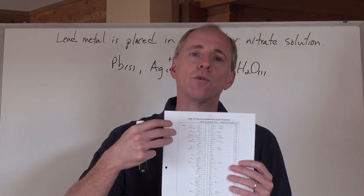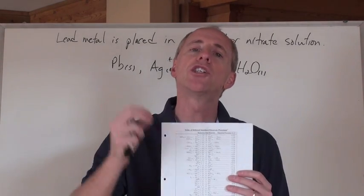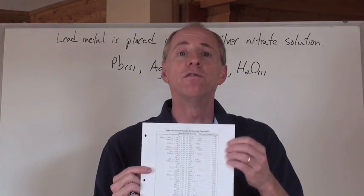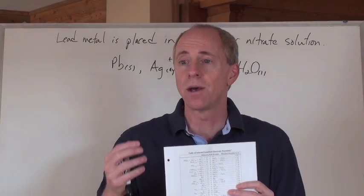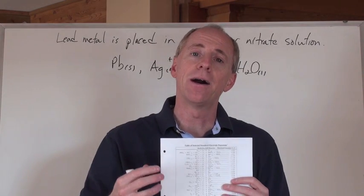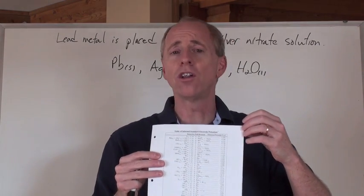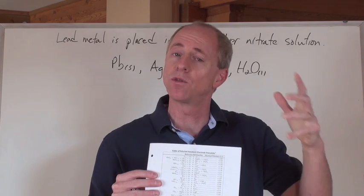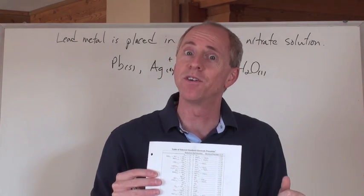This chart writes everything as a reduction half-reaction and ascribes to it what we call a voltage. That's a potential difference. It's called an E value or an E naught value under standard conditions of 25 degrees Celsius and one atmosphere of pressure.